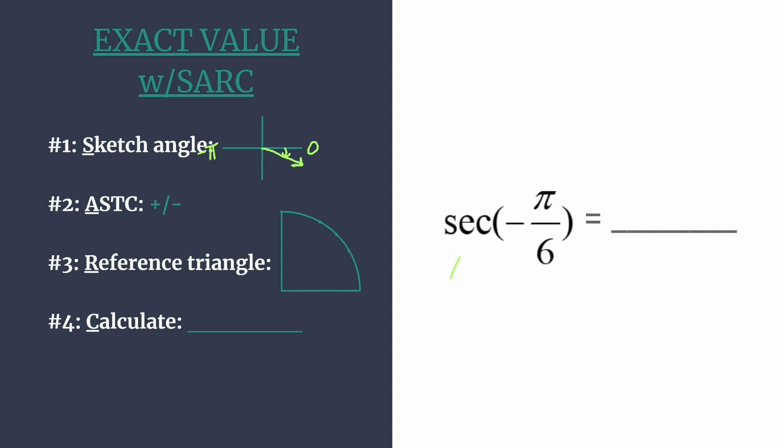So we won't spend too much time on the first three. All students, so that's sine and cosecant are positive. Take, tangent and cotangent in the third quadrant are positive. Classes, so cosine and secant are going to be positive in the fourth quadrant.